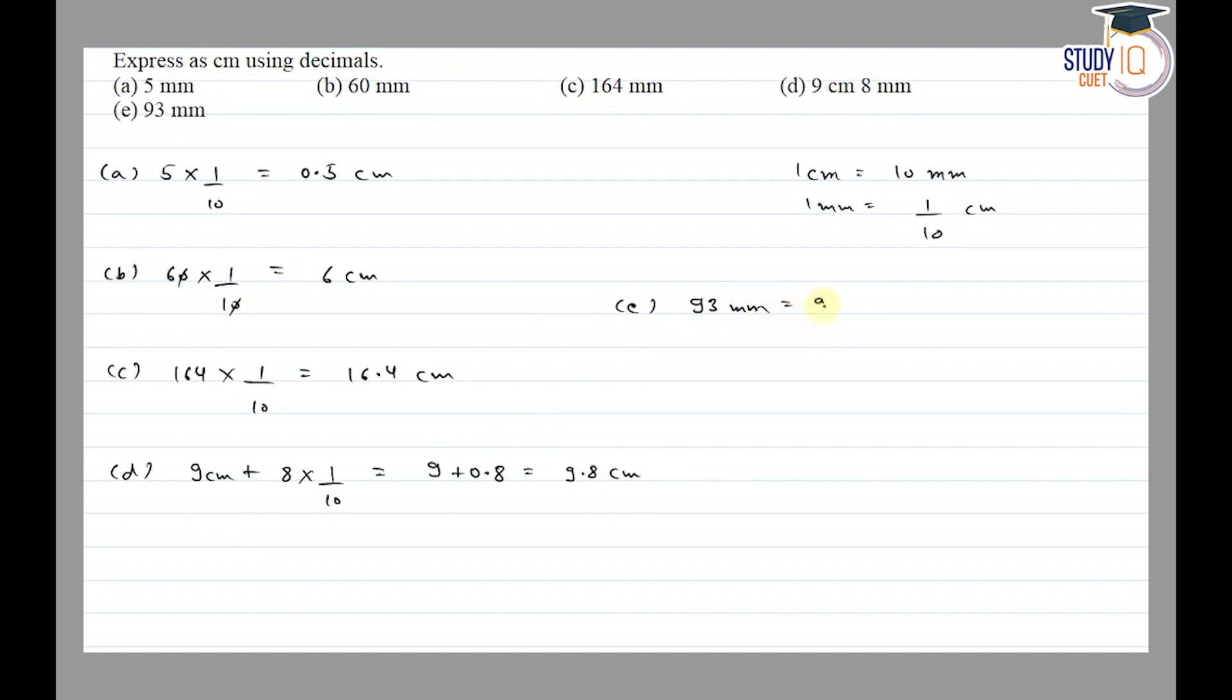Part e is 93 mm. To convert to centimeters, multiply by 1 by 10. After 1 digit, place the decimal, giving 9.3 cm.